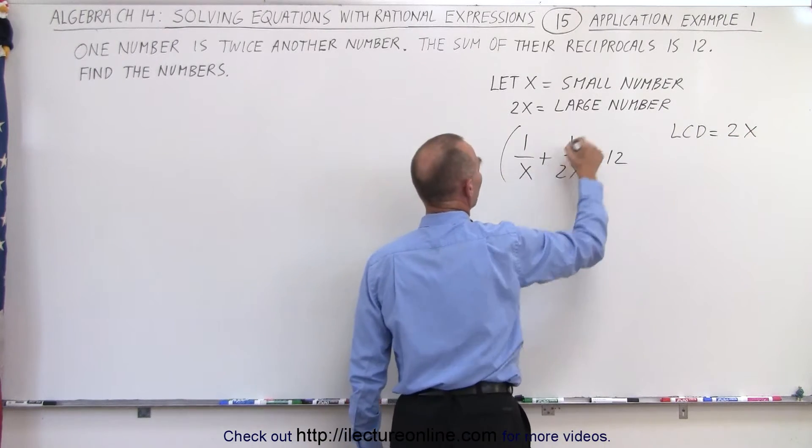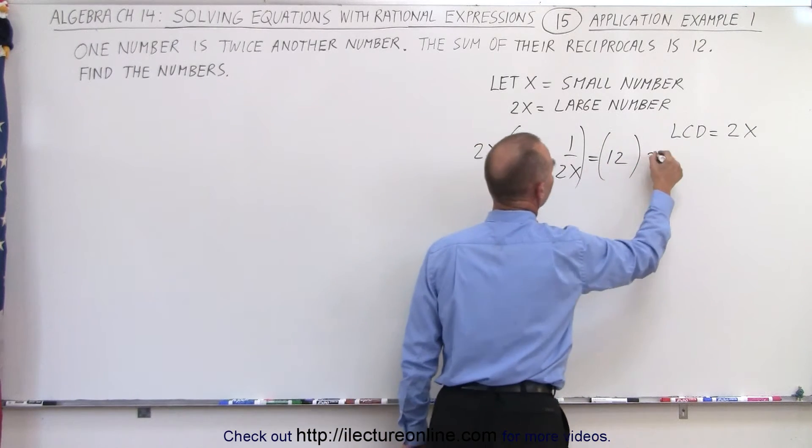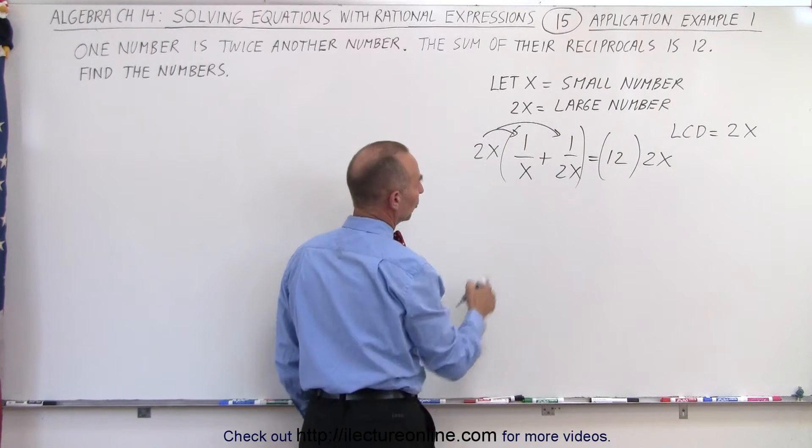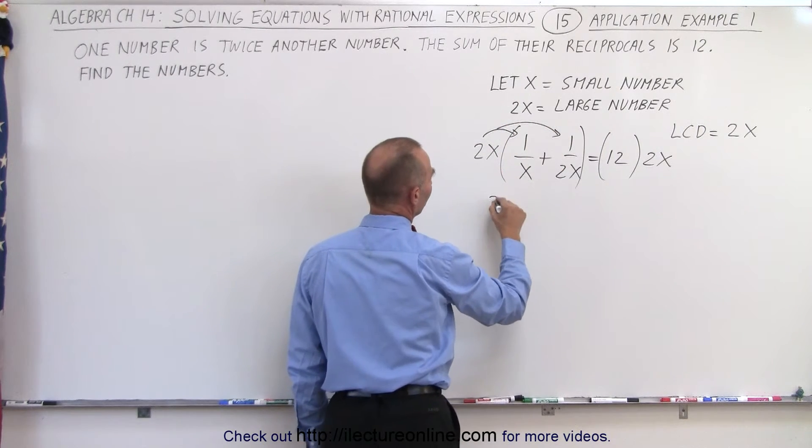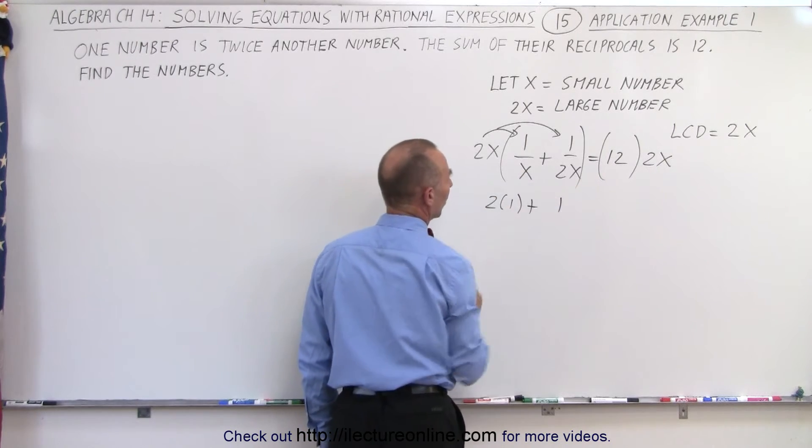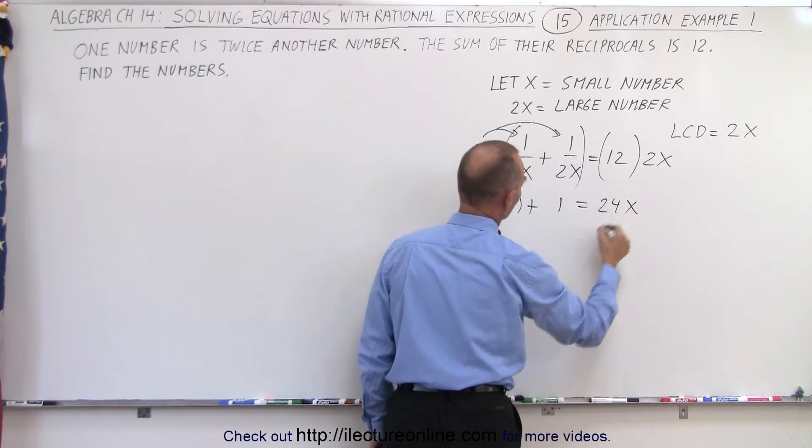That means we're going to multiply both sides of the equation by the lowest common denominator. When we do that, on the left side, notice we're going to multiply that with both terms. Here the x's cancel out. We're left with 2 times 1 plus the 2x's cancel out. We just have a 1 equals 12 times 2x, which is 24x.